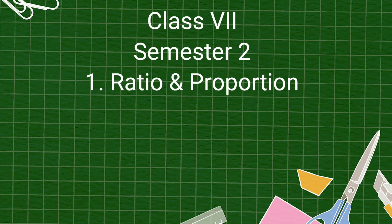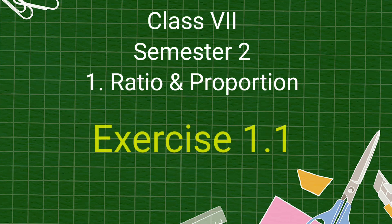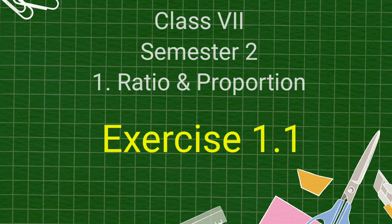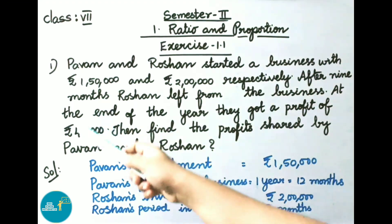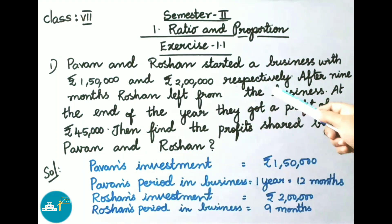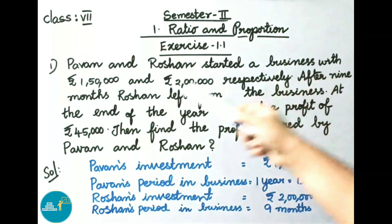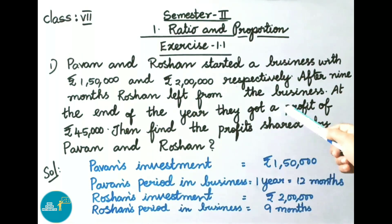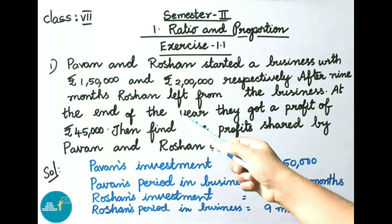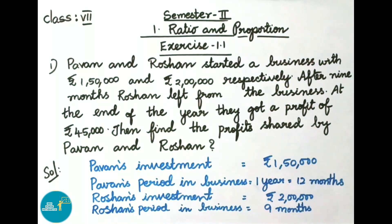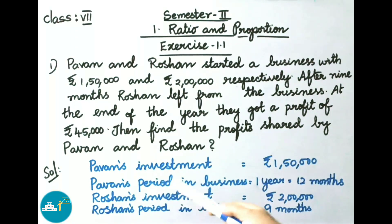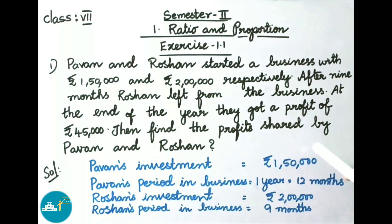Hello everyone, welcome to High School Mathematics channel. Today we are going to learn Class 7 Semester 2 Chapter 1 Ratios and Proportion, Exercise 1.1. Question number 1: Pawan and Roshan started a business with 1 lakh 50,000 rupees and 2 lakh rupees respectively. After nine months Roshan left from the business. At the end of the year they got a profit of 45,000 rupees. Find the profits shared by Pawan and Roshan.